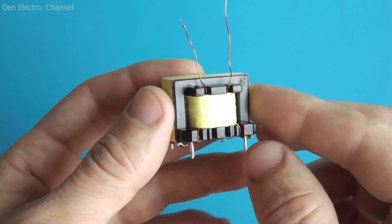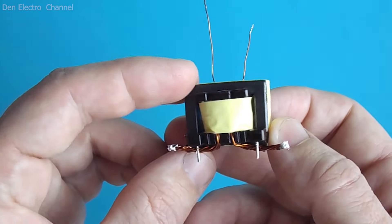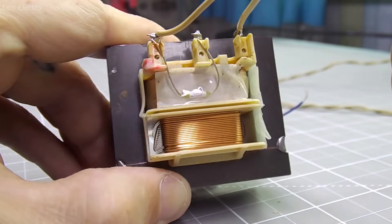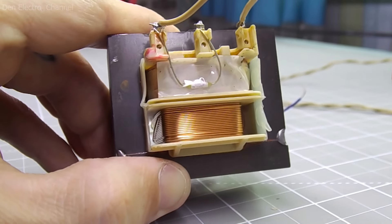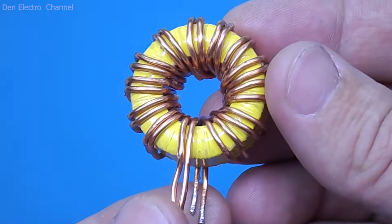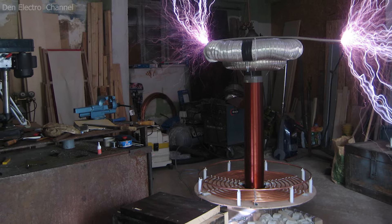In amateur radio practice, it is very often necessary to wind various coils. These could be step-down or step-up transformers, chokes, or even Tesla high-voltage transformers.